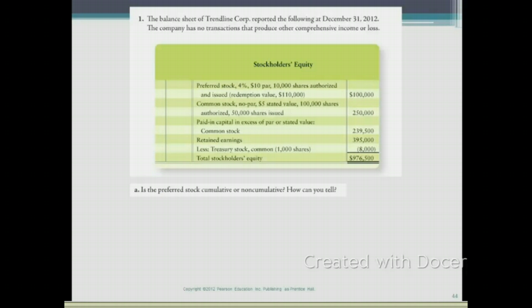Let's take a look at an example. The balance sheet of Trendline Corp reported the following at December 31, 2012. The company has no transactions that produce other comprehensive income or loss, which we will not cover in this class. Stockholders' equity includes preferred stock, common stock, paid-in capital in excess of par, retained earnings, and treasury stock, with total stockholders' equity of $976,500.